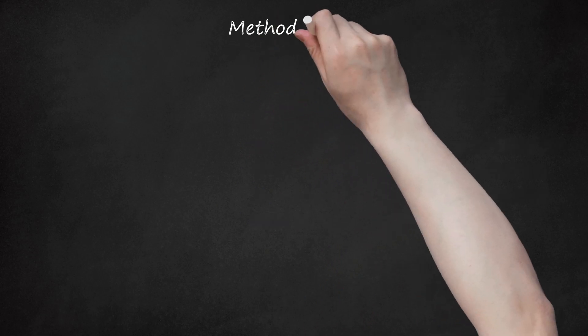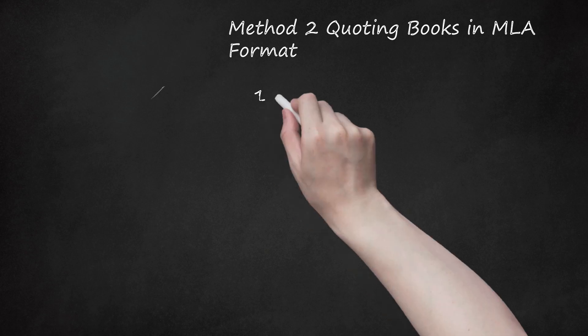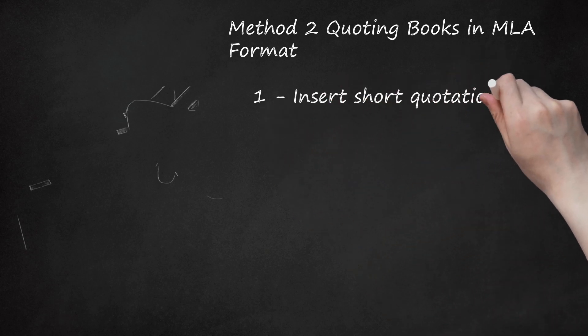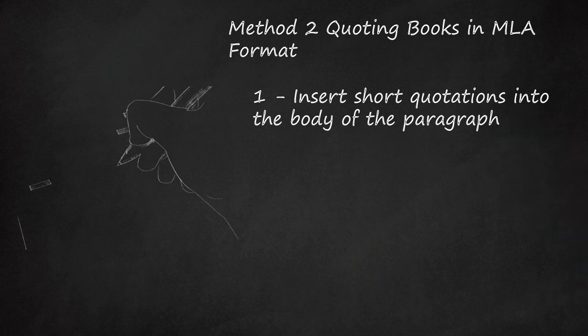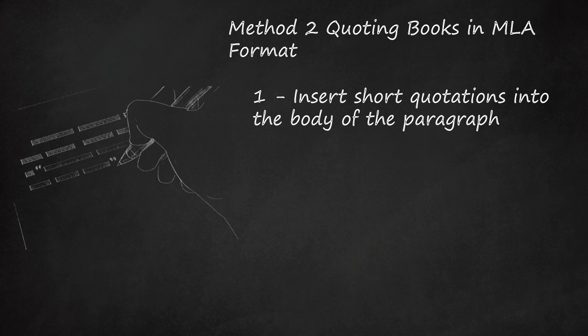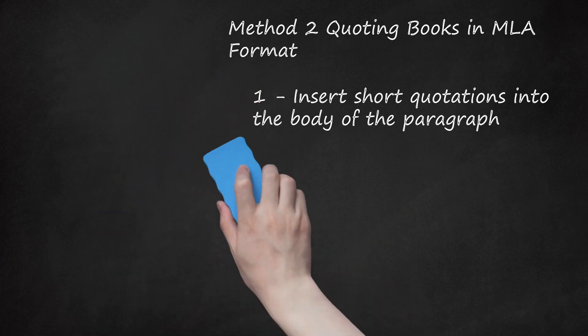Method 2: Quoting Books in MLA Format. Step 1: Insert short quotations into the body of the paragraph. A quotation shorter than four lines of prose or three lines of verse does not need to be its own freestanding block of text. It can simply be incorporated into the paragraph in which you are using it. It should begin and end with double quotation marks.